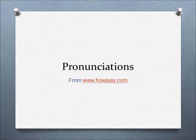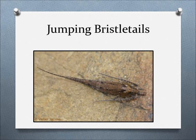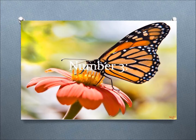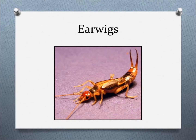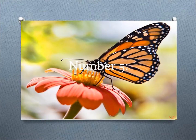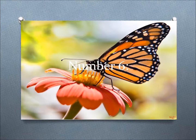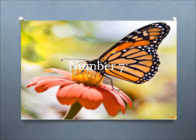Pronunciations come from www.howdoyousay.com. Number 1: Archaeognatha — example: Jumping Bristletails. Number 2: Blattodea — example: Cockroaches. Number 3: Coleoptera — example: Beetles. Number 4: Dermaptera — example: Earwigs. Number 5: Diptera — example: True Flies. Number 6: Embioptera — example: Web Spinners.